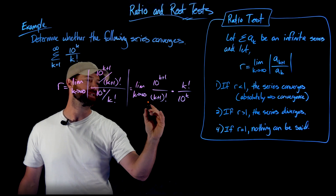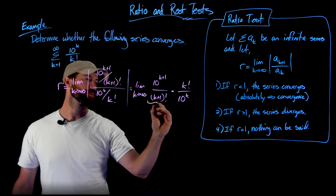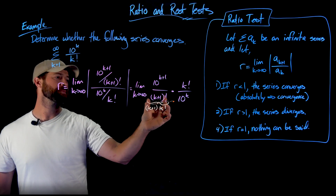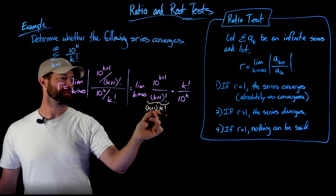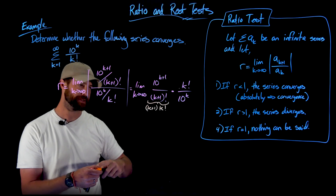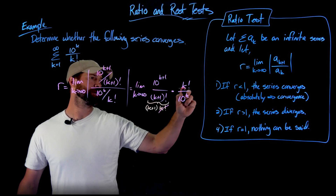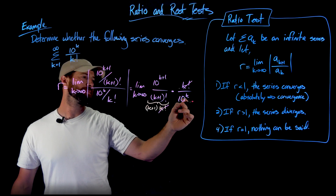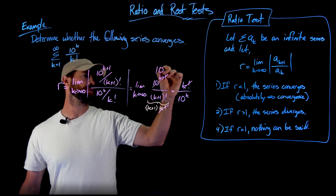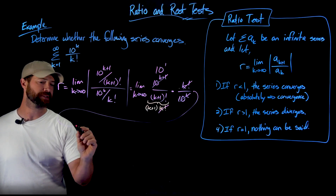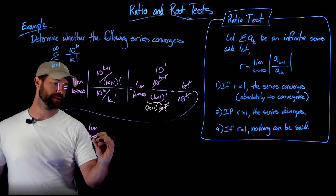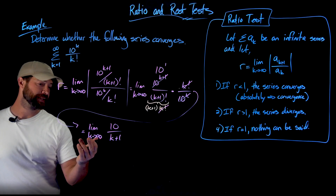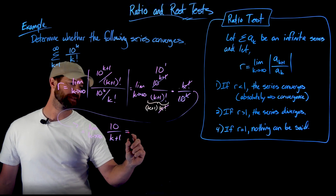All factors in the expression are explicitly positive, so I can remove the absolute value signs. Flipping and multiplying: I get 10 to the k plus one over k plus one factorial, times k factorial over 10 to the k. Now, k plus one factorial can be rewritten as k plus one times k factorial. So k factorial cancels between the denominator and numerator. And for the exponential part, subtracting exponents: 10 to the k plus one divided by 10 to the k leaves just 10 to the first power. This simplifies beautifully to the limit as k goes to infinity of 10 over k plus one.